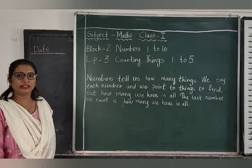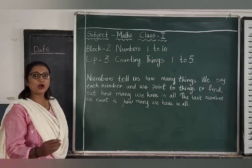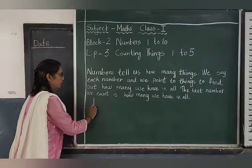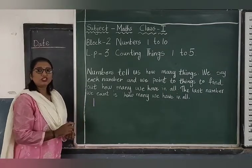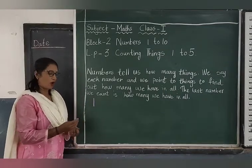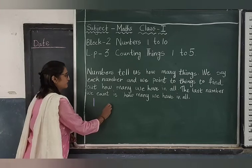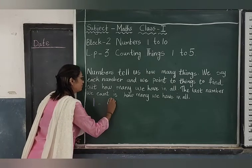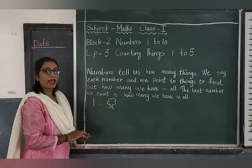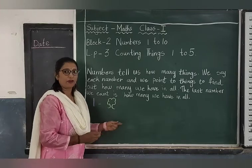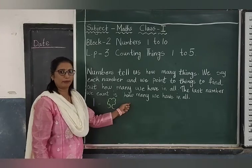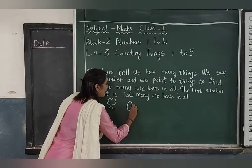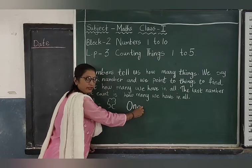Now let us see the number and the object. How many pictures should I draw? 1. Yes, so I have to draw 1 picture. And I have to write the number in it. So I will write O-N-E, 1.